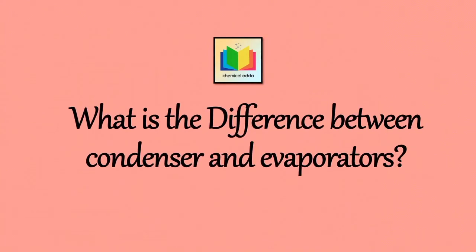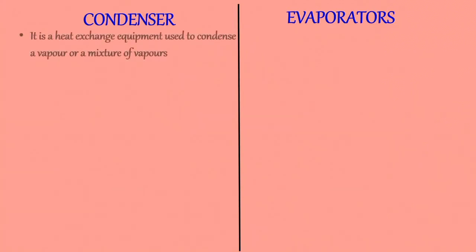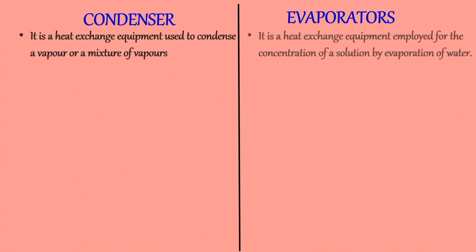The next question: what is the difference between condensers and evaporators? These are types of heat exchangers classified on the basis of the physical state of fluid. A condenser is a heat exchange equipment used to condense a vapor or a mixture of vapors, and an evaporator is a heat exchange equipment employed for the concentration of a solution by evaporation of water.